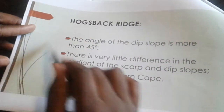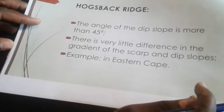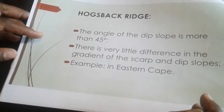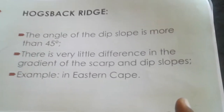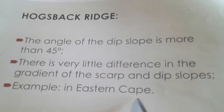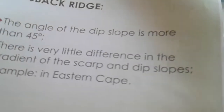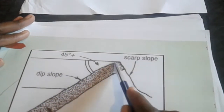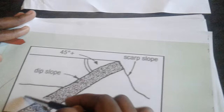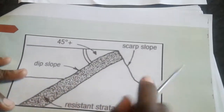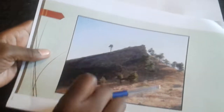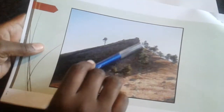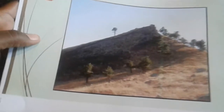The third type is the hogsback. In terms of the dip slope, it is more than 45 degrees. An example is the hogsbacks found in the Eastern Cape. In the diagram, you can see the dip slope at more than 45 degrees, and in real life you can see how steep this slope looks — that is the hogsback ridge.